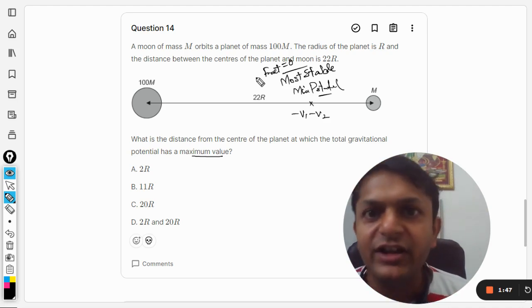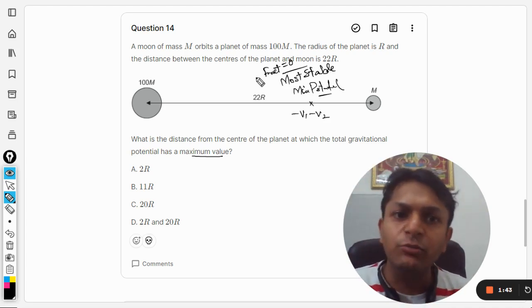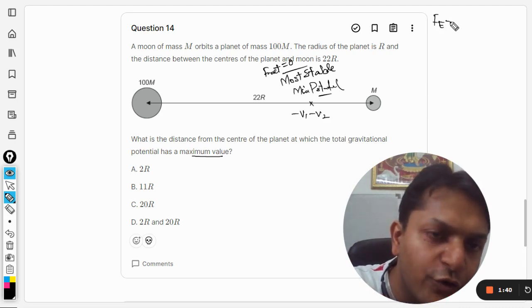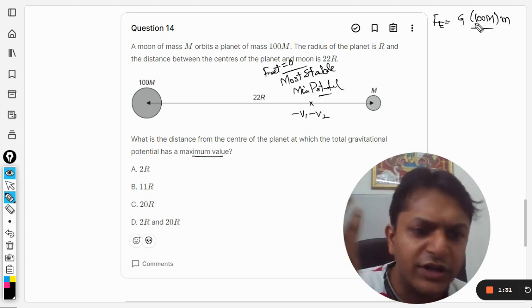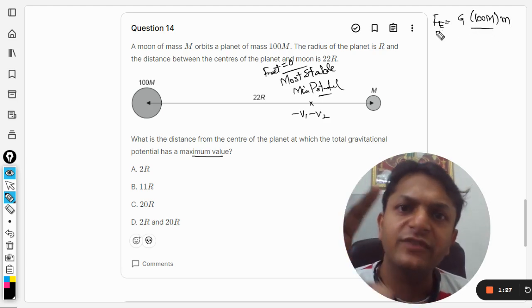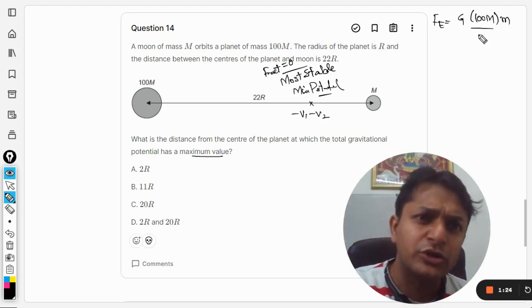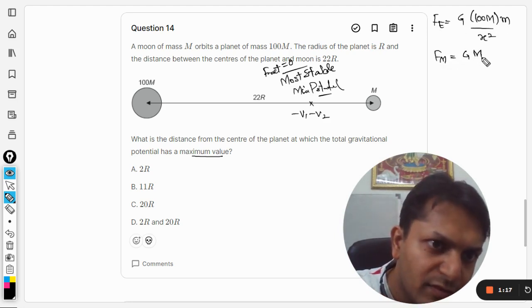Clearly, we are going to equate the gravitational forces created by Earth and the moon. So let us go for it. So the force because of the Earth will be G times 100m times m of the satellite, although if you are not interested you can skip it because we can talk in terms of gravitational field strength. So the distance is taken to be x, and the force due to moon will be G times the masses, over (22r - x) squared.